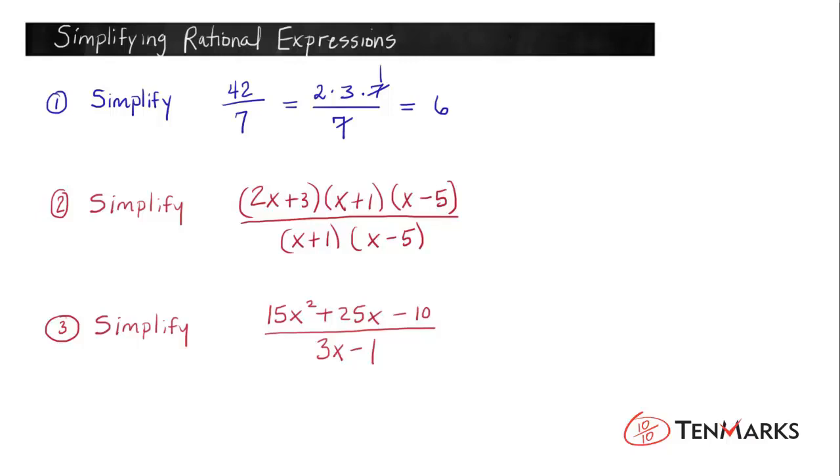Problem number 2 is a rational expression. There's a polynomial both in the numerator and the denominator. Notice that this expression is already factored. And we know that not because there are all of these parentheses. That's not how you know that it's factored. We know that it's factored because it's all multiplication.